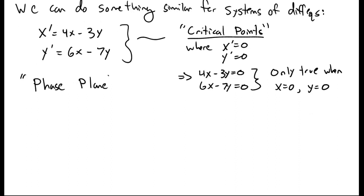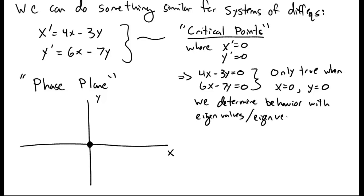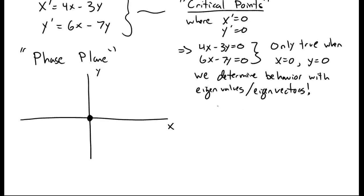What we do then is construct a phase plane plot, where we do a parametric plot of y(t) and x(t). There's a critical point at (0, 0). To determine the rest of the behavior in our phase plane, we look at eigenvalues and eigenvectors of our system of equations, and that tells us what happens.